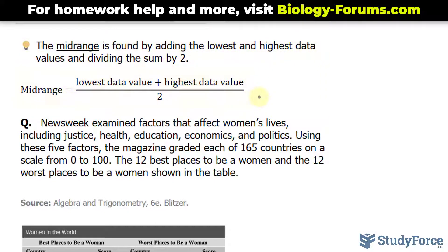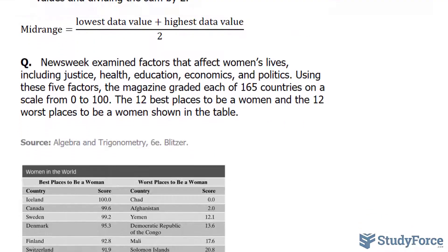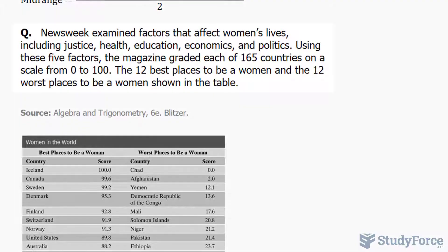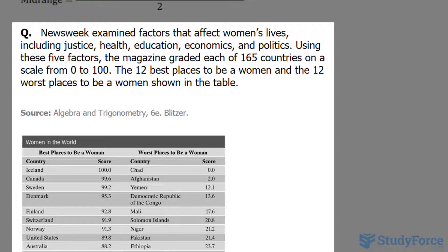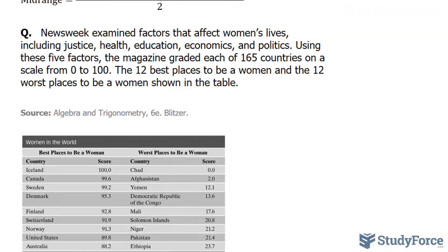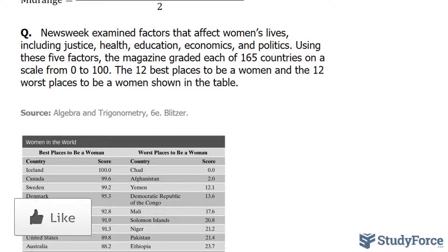Our question reads: Newsweek examined factors that affect women's lives, including justice, health, education, economics, and politics. Using these five factors, the magazine graded each of 165 countries on a scale from 0 to 100. The 12 best places to be women and the 12 worst places to be women are shown in the table below.